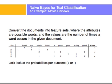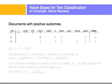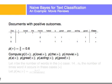Let's look at the probabilities per outcome. Documents with positive outcomes are documents one, three, and five. First, let's compute the probability that the document is positive: three out of five documents, that's 0.6. Then we have to compute the individual probabilities of each word given positive — the word I given positive, loved given positive, the given positive, and so on. In reality I have to compute all possible words in the vocabulary with the positive outcome.